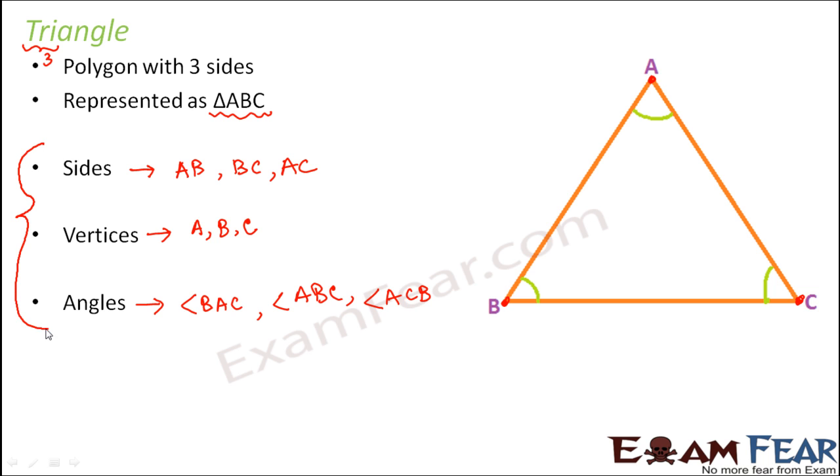So all in all there are some nine elements which determine or which specify a triangle. Three sides, three vertices and three angles.